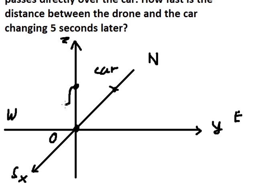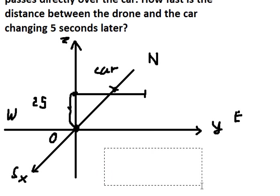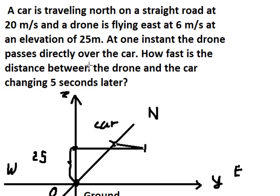Let's say that is about 25. The road goes to the east, so they will go in here. This is on the sky, so this one — this is about the route. From this point to the car, we want to find about the rate of change.